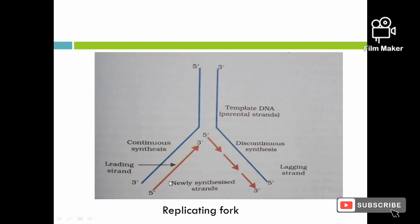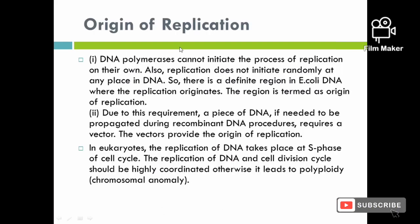DNA polymerases cannot initiate the process of replication on their own. Replication starts at a definite region called the origin of replication. At the replicating fork, there is a 3' OH group called the RNA primer, which is required to initiate synthesis.